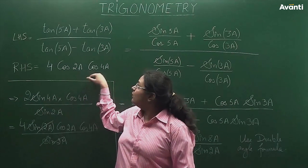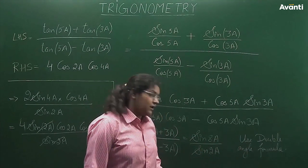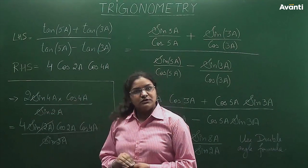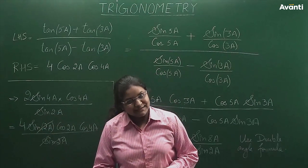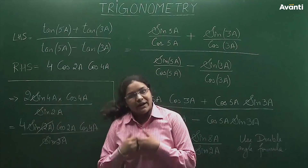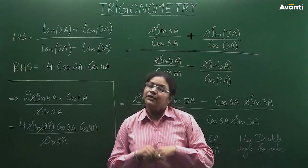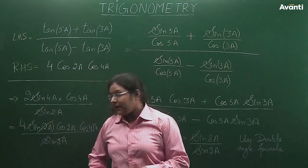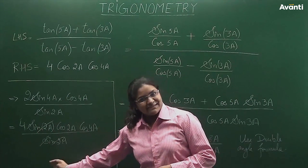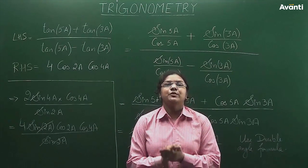I will apply the double-angle formula and write sine of 8a as 2 times sine of 4a times cos of 4a, with sine of 2a remaining below. I then break sine of 4a again using the double-angle formula: 2 times sine of 2a times cos of 2a. This gives 4 in front, and sine of 2a cancels, leading to the final expression that equals the right-hand side.